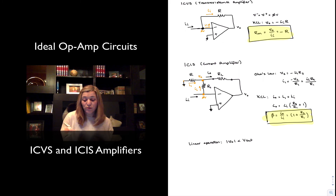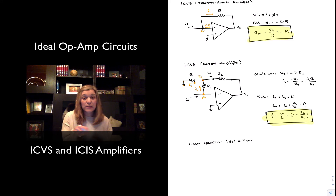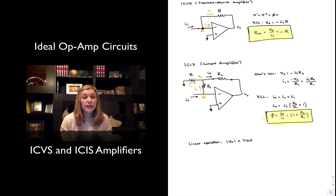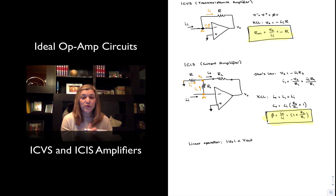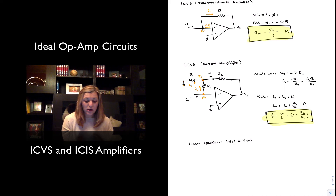We can solve for V_out and figure out the range of input currents that I can provide at the input while still having the op-amp operating in the linear region. So this concludes examples of the different types of amplifiers. We have covered voltage amplifiers, transconductance amplifiers, transresistance amplifiers, and current amplifiers.